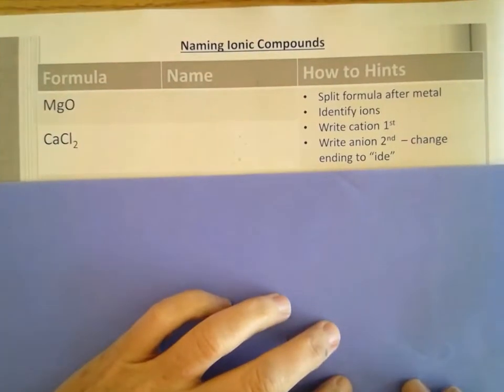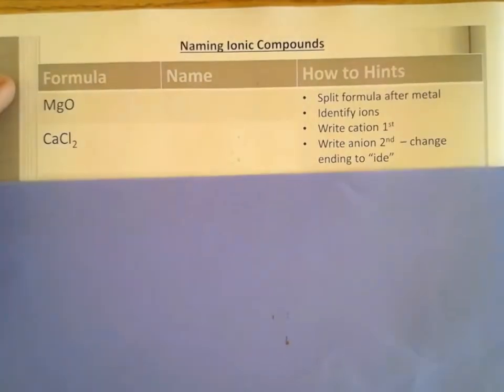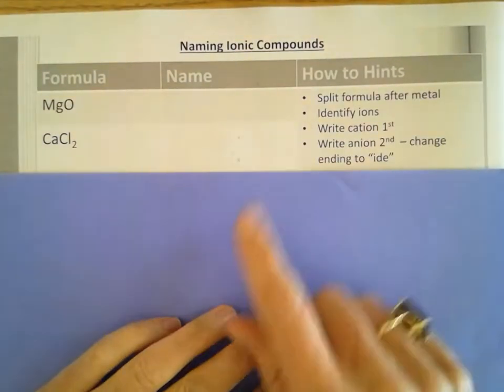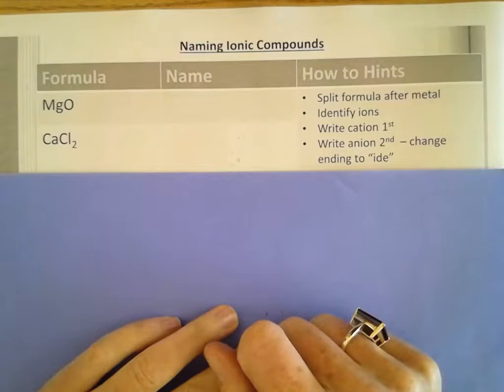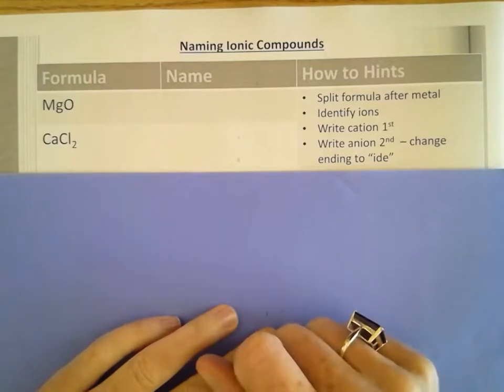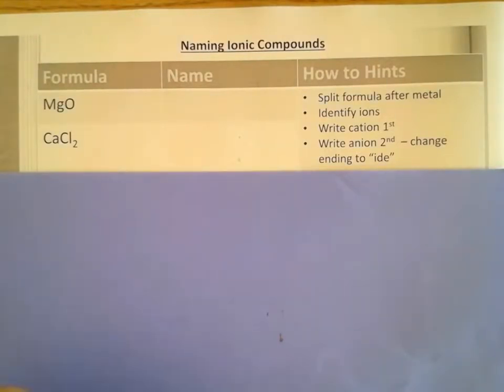This first set are the simplest type and the hints say you're going to split the formula after the metal, identify the ions, write the cation first, write the anion second, and change the ending to IDE.